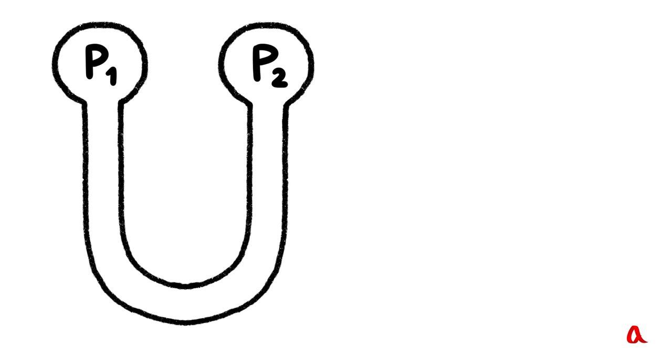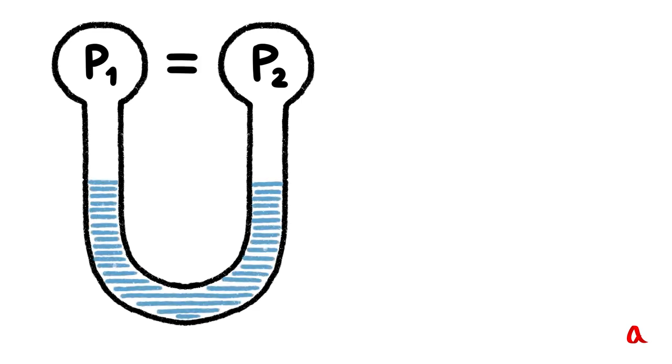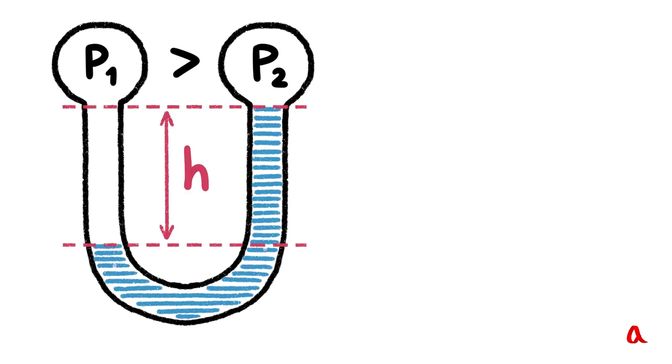When the pressure levels P1 and P2 in the bulbs were equal, the water in both bands of the U-shaped tube was on the same level. If pressure P1 becomes higher than pressure P2, this surplus of pressure pushes part of the water from the right band into the left one. Thus, a difference in levels has emerged. Let's call it H.